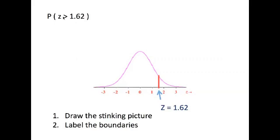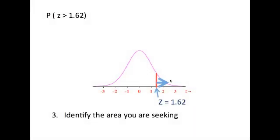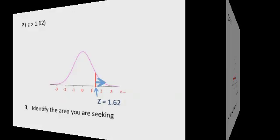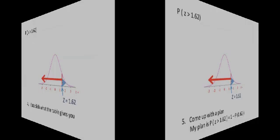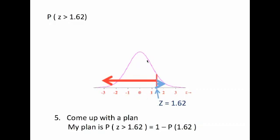For our last problem, we look at the probability that z is greater than 1.62. We draw the stinking picture and label the boundary at z equals 1.62, then identify the area to the right — where z is greater than 1.62. The table gives us the area to the left of 1.62, but we want the area to the right. The plan: take the entire area of 1 and subtract the table value, which leaves the area we seek.